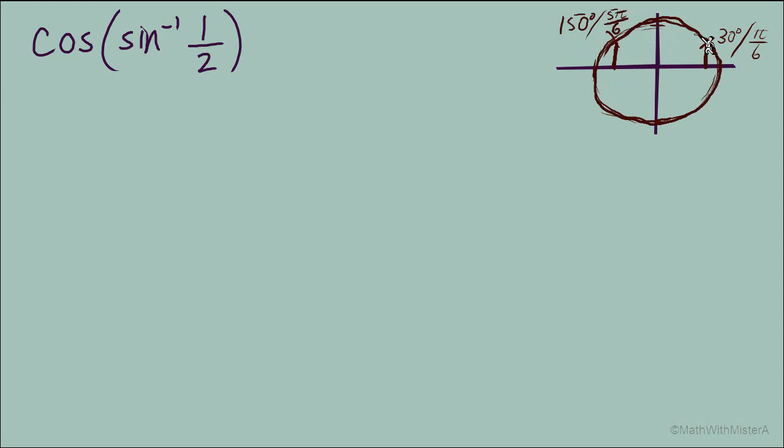Now we have to remember how the inverse sine function works. It only finds points in quadrants 1 or 4. So we need to choose the value of 30 degrees, or pi over 6 radians, not the point here in quadrant 2.